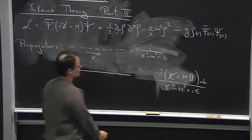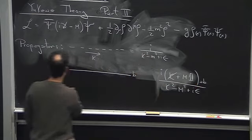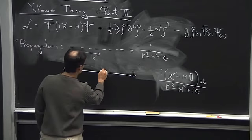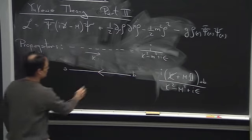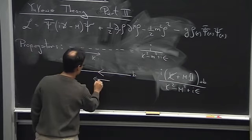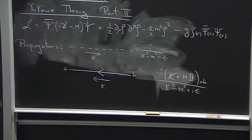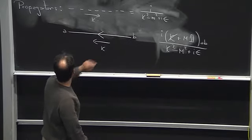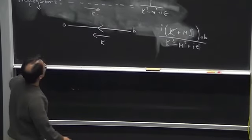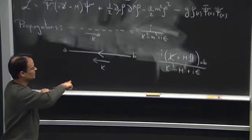This propagator propagates a nucleon of type b to type a, with momentum k. The interaction vertex — that's the propagator — and we should be careful about the direction.